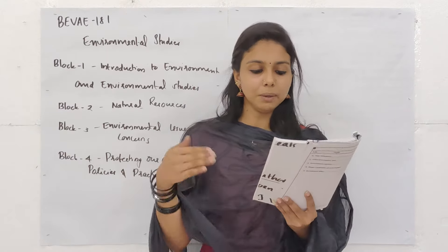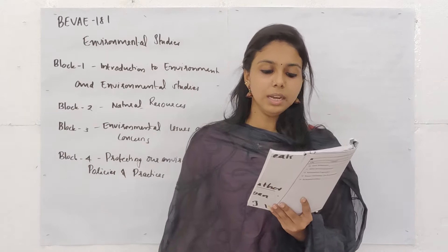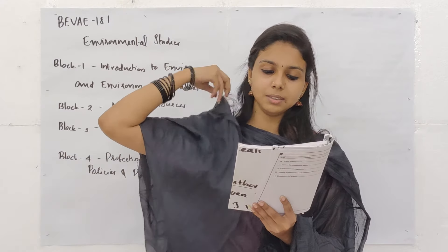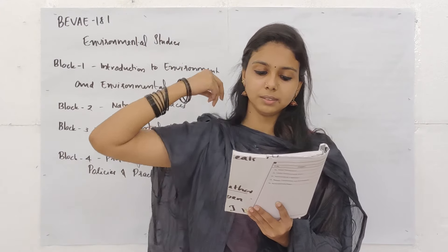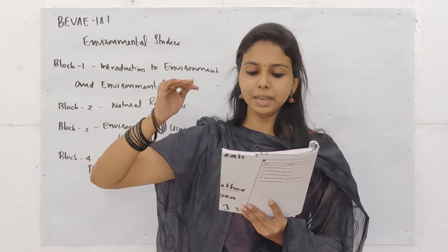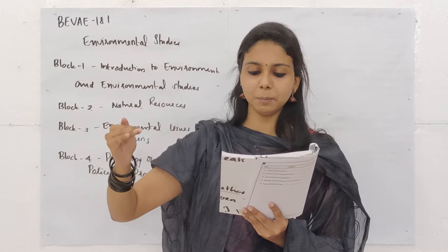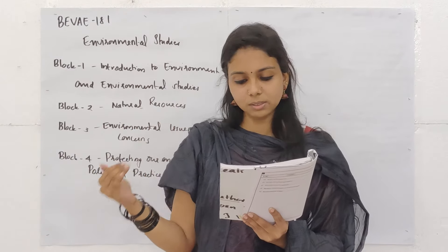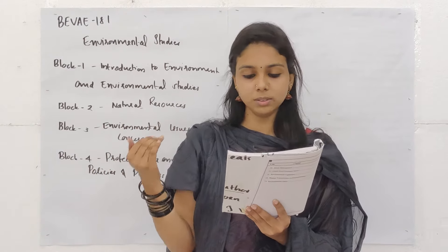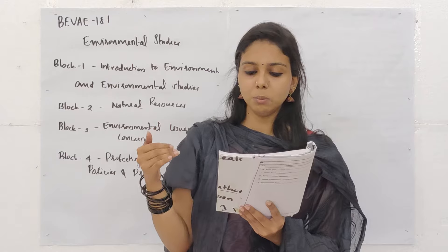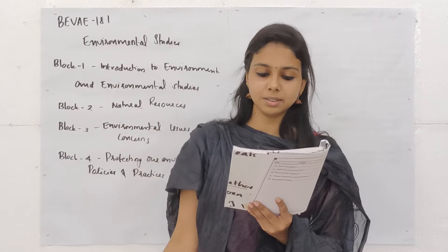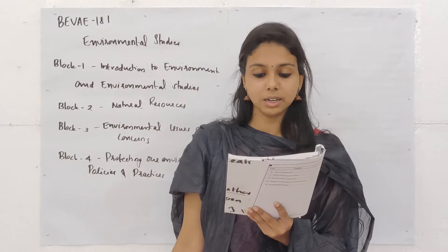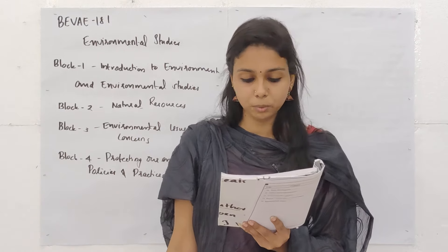Question 9: In ecological succession, the final stage is termed as? Options: A. Climax community, B. Lichen stage, C. Moss stage, D. Seral stage. The answer is Climax community.